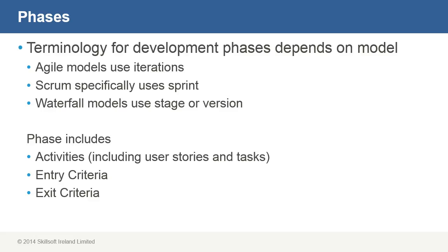Agile iterations utilize cross-functional teams, the benefit being that these teams will tackle the entire scope of the task — things like requirements, coding, testing, and so on. When iterations are completed, the working results can be reviewed by project managers and other stakeholders. The point here is that these iterations, these steps in the process, aren't meant to deliver fully functional bug-free software. The goal is to have a working version with minimal bugs.